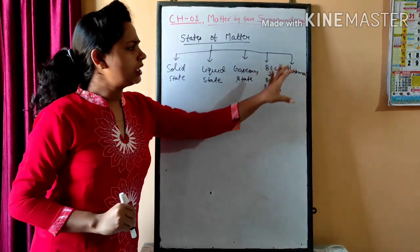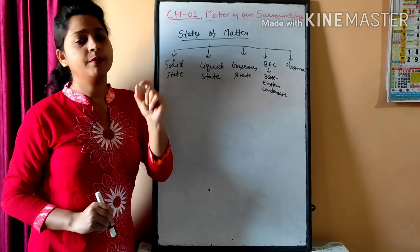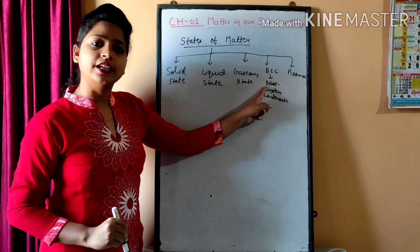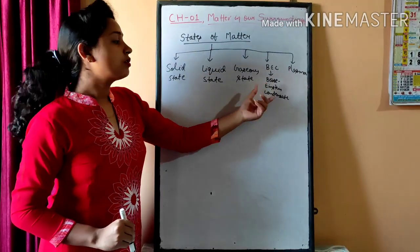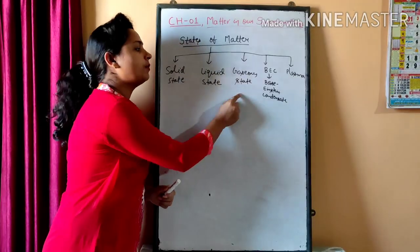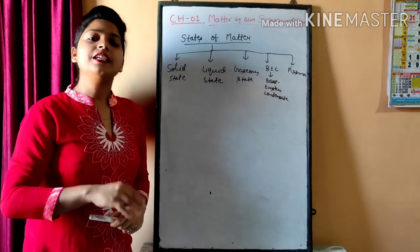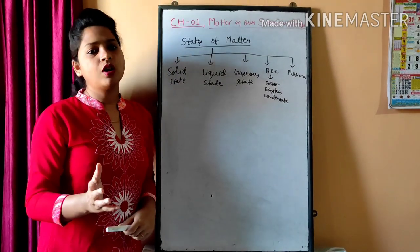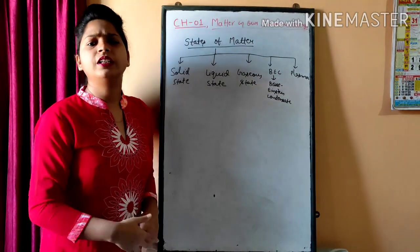What is B.E.C.? B.E.C. is Bose-Einstein condensate. Bose and Einstein are both physicists. They identified states of matter different from the first three. B.E.C. actually exists at extremely low temperature. Since it is not a very common state of matter, that's why it is not given in your course.